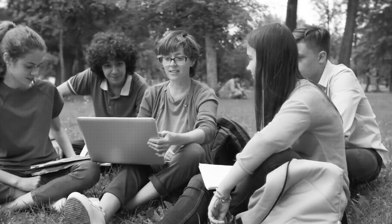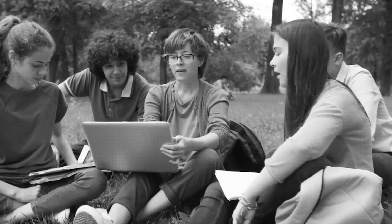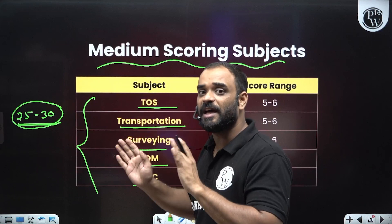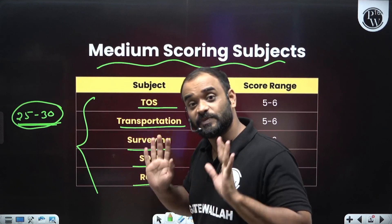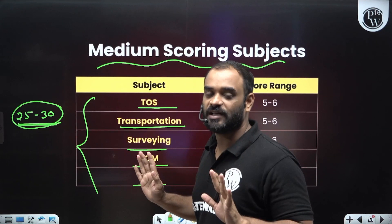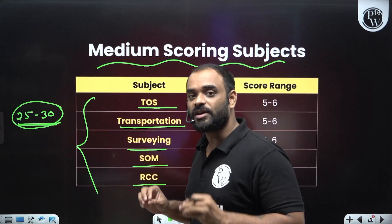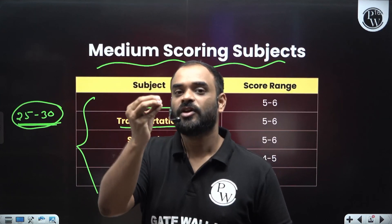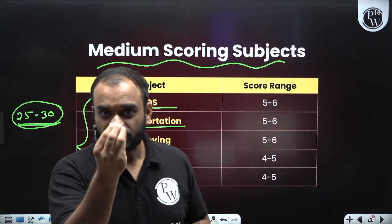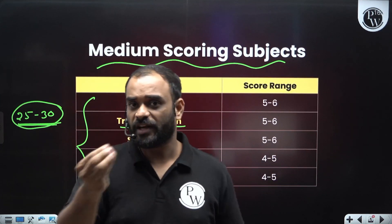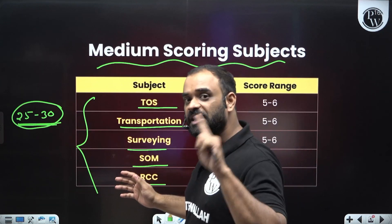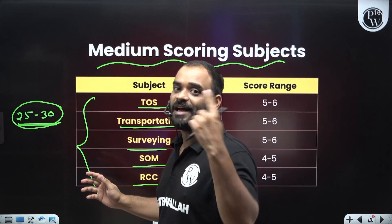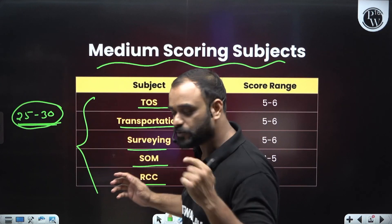Please try to cover these medium scoring subjects as well as high scoring subjects — do not skip any of them. It is mandatory to cover these subjects. Otherwise, you are trying to skip a major part of your GATE paper. So do not skip any subject from medium scoring or high scoring categories.